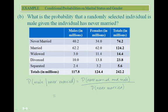Our top number is the same: 40.2 million. But now we're looking at our total for never married, which is 74.2 million. When we divide that, we get about 0.542, which means approximately a 54.2% probability that the randomly selected individual is male given that he or she has never married.